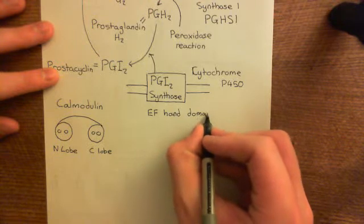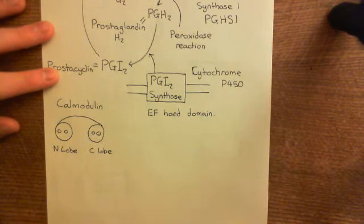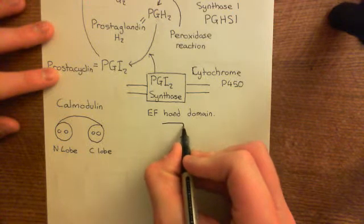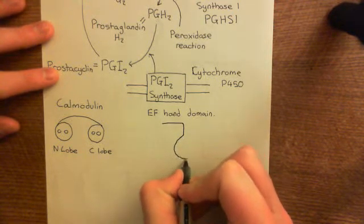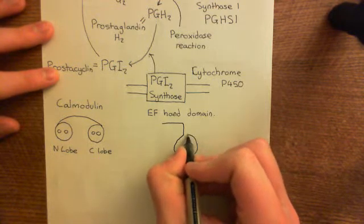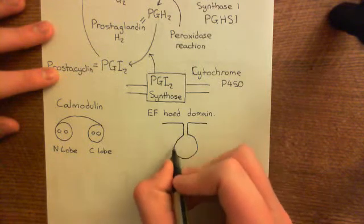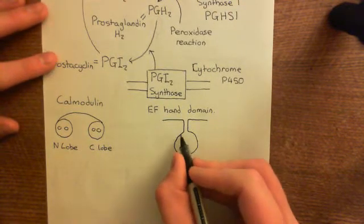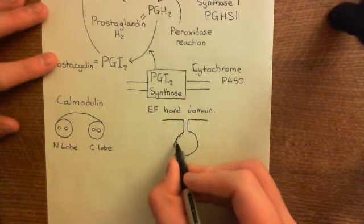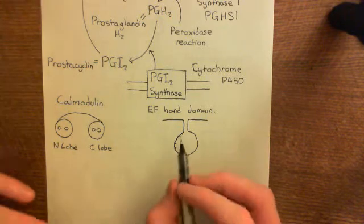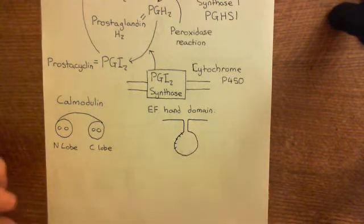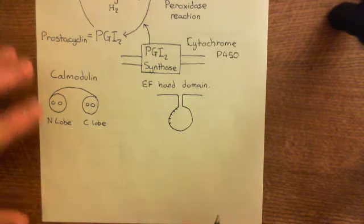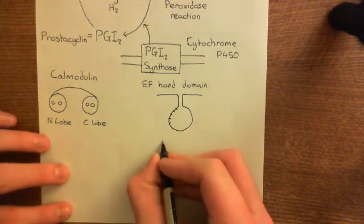An EF-hand domain is a polypeptide structure which is capable of binding calcium. Its general structure consists of a polypeptide that folds into a loop. The amino acids within this loop all have acidic R-groups — for example, aspartic acid, which has a methylene group followed by a carboxylic acid group as its R-group. This is an acidic R-group because the carboxylic acid group is capable of donating a proton, leaving the oxygen with a negative charge.